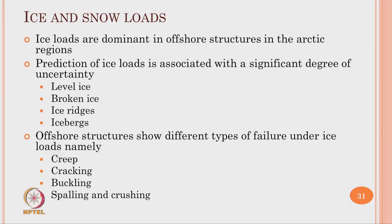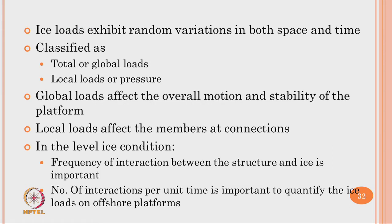The next category is ice and snow loads. Ice loads are dominant in offshore structures in Arctic regions. Prediction of ice loads is associated with significant uncertainty because it depends on whether the ice is level ice, broken ice, an ice ridge, or an iceberg, as the impact caused by each is entirely different. Offshore structures show different modes of failure under ice loads: creep failure, cracking, buckling, spalling and crushing of concrete. Ice loads exhibit random variations in both space and time.